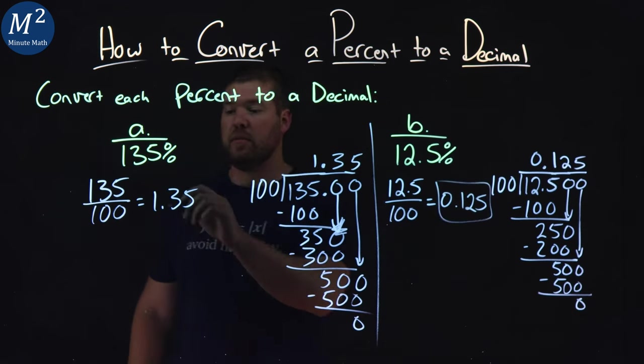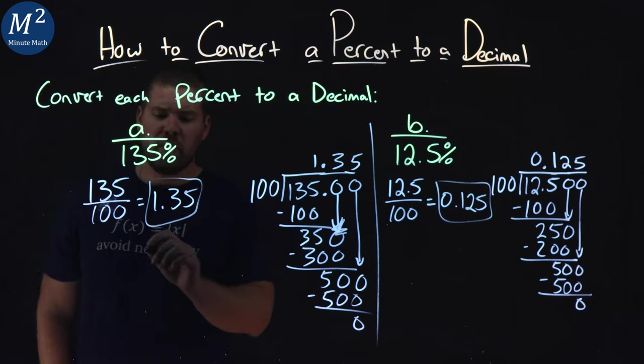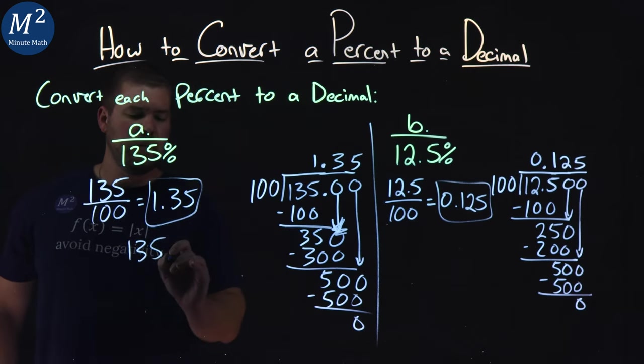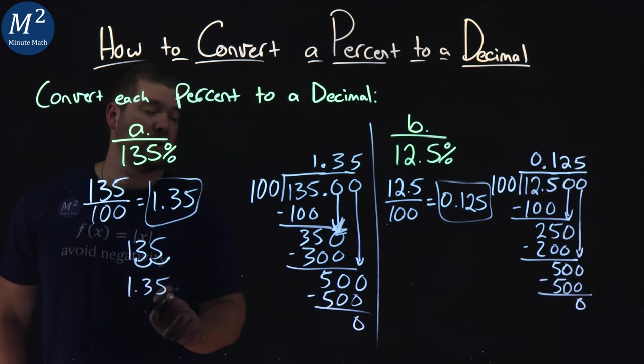Alright, we got our answer here and here as well. What about the quick way to do this? We take the 135%, put the decimal right here, and move it to the left two spots. One, two. So 1.35 would be my decimal answer.